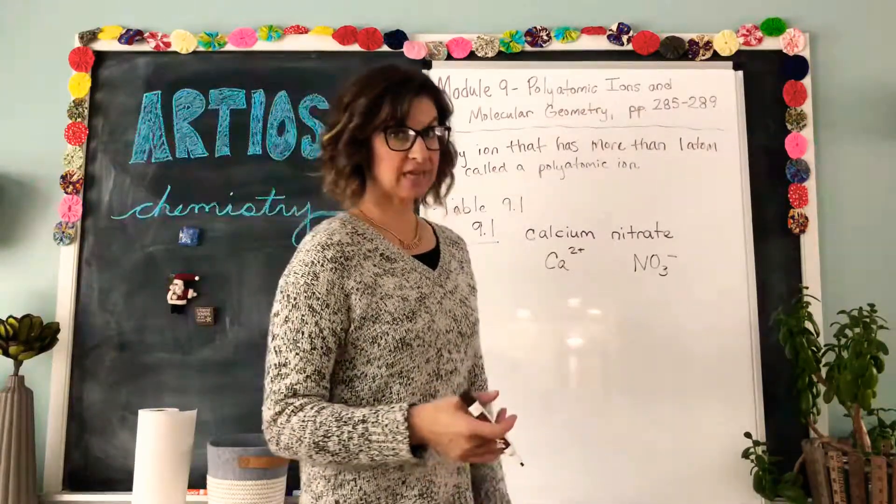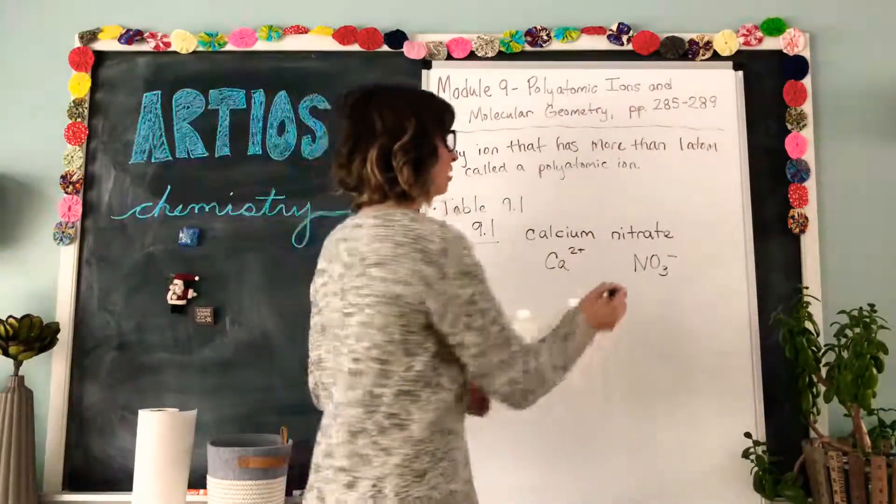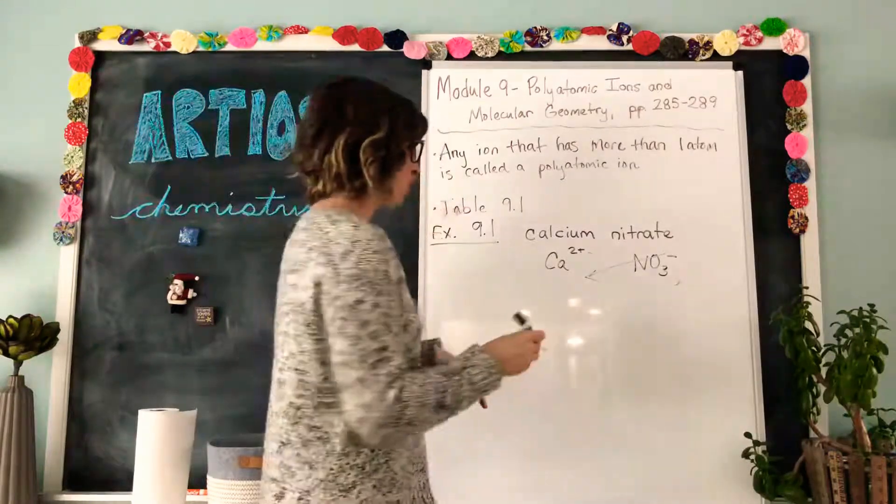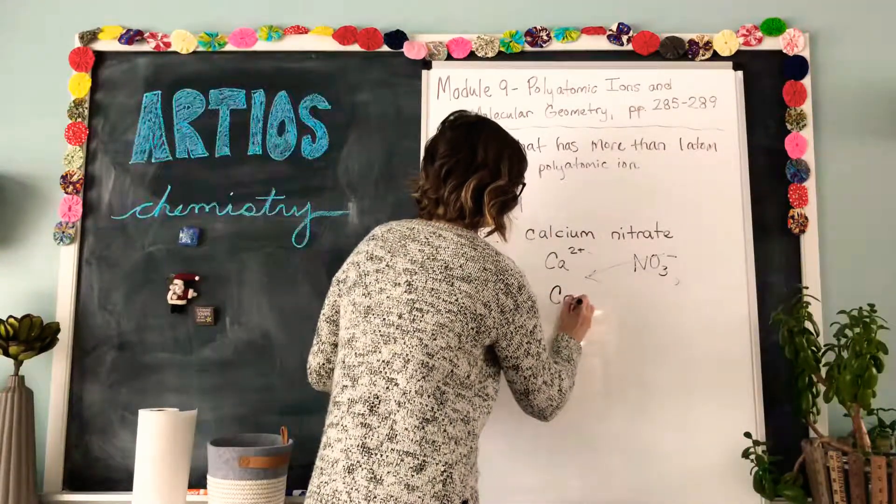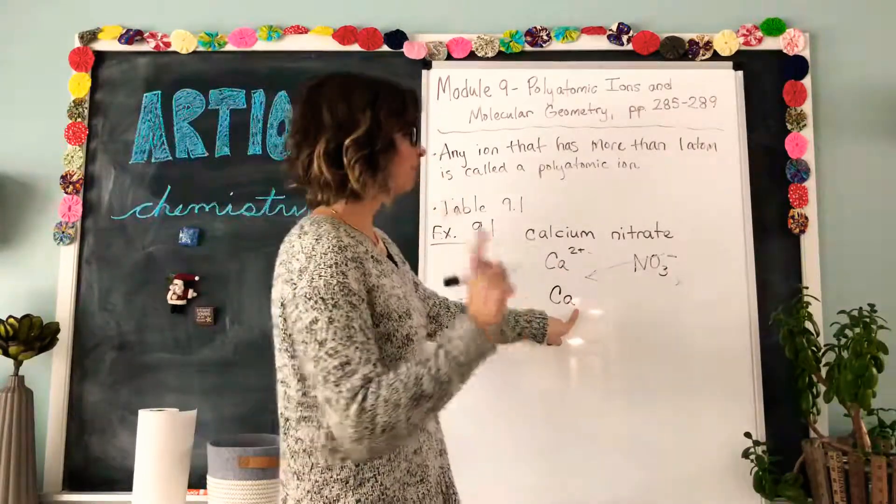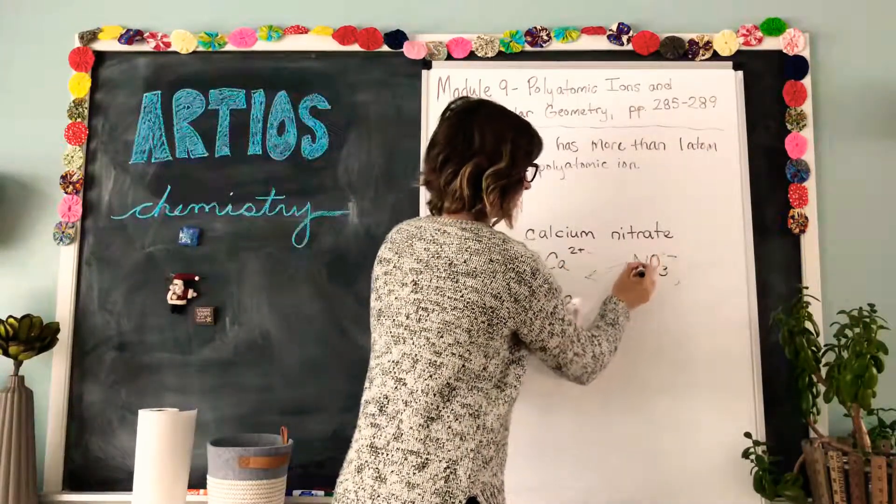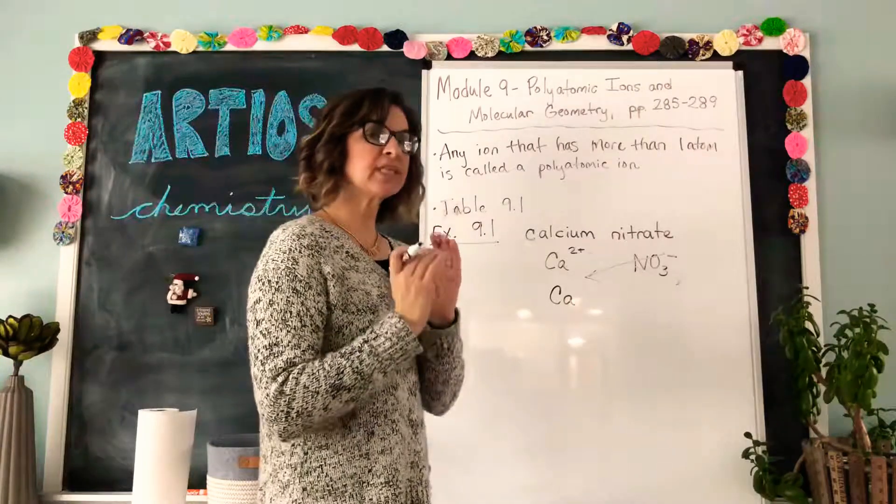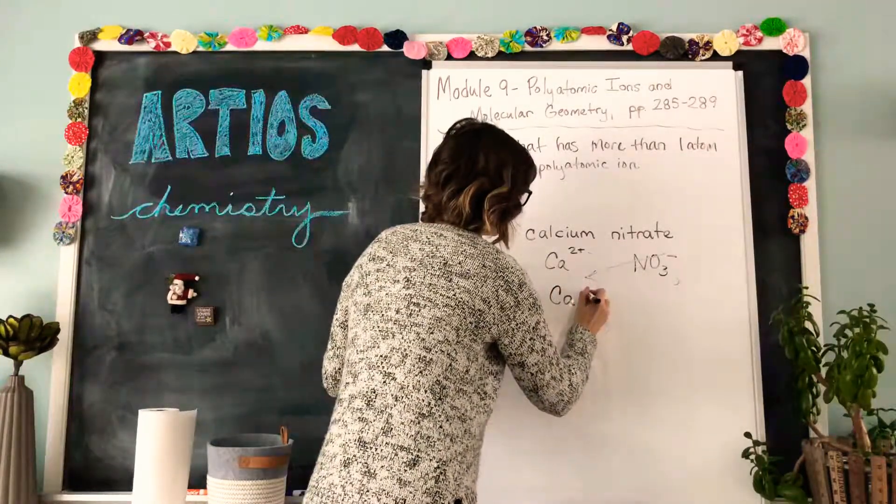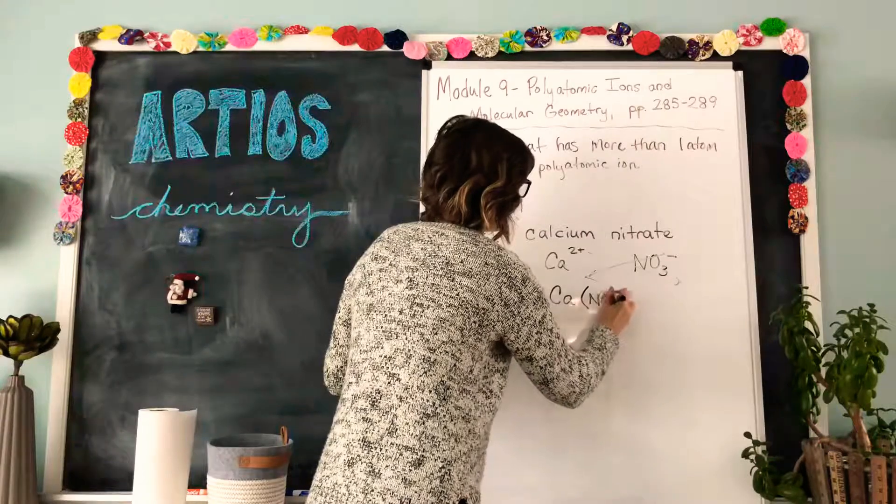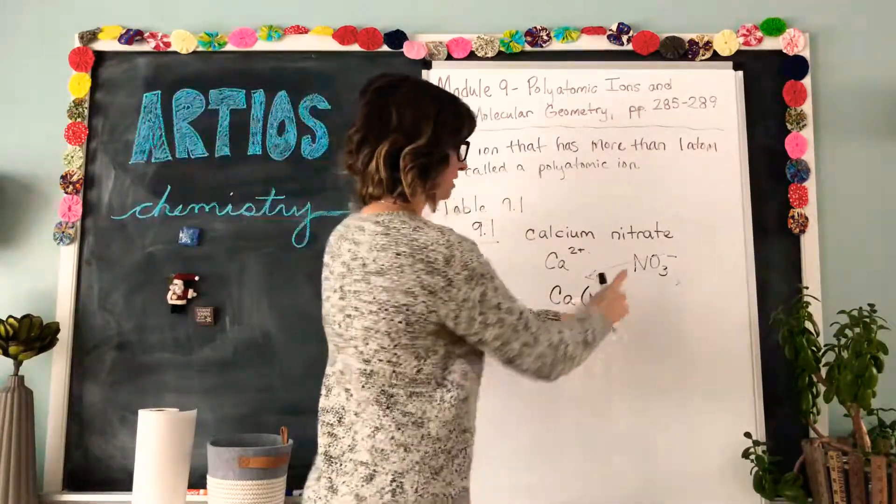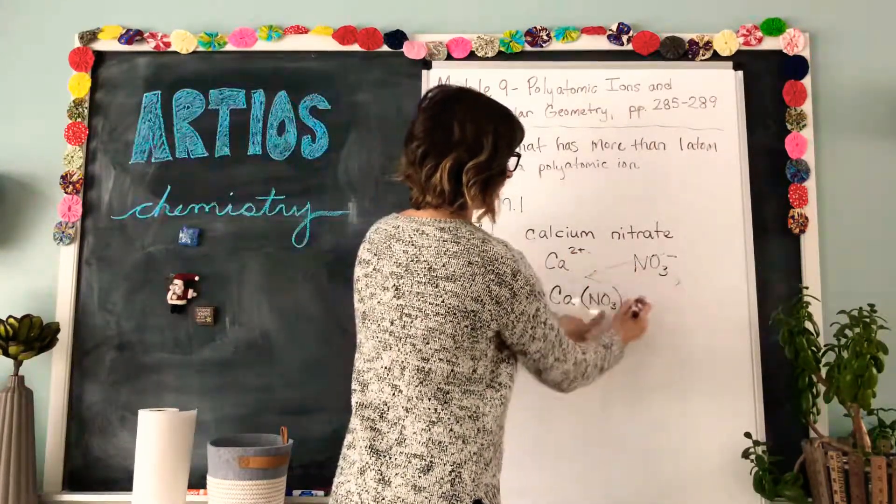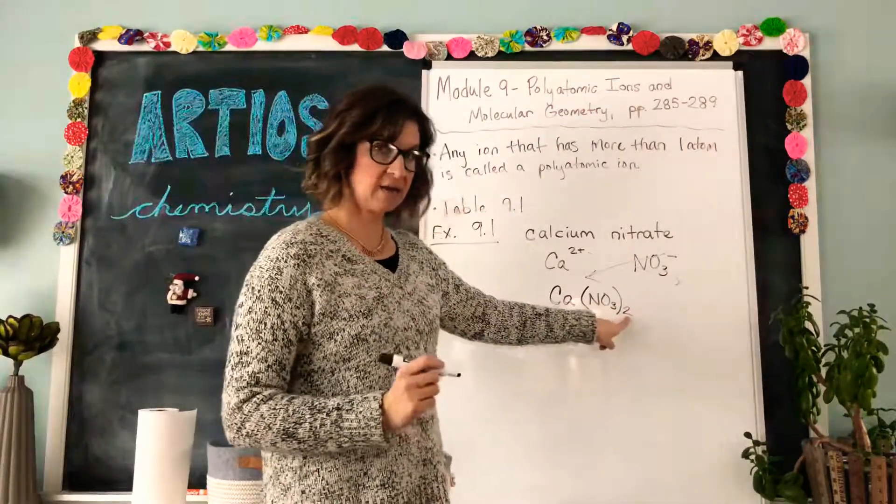Now in order to come up with the chemical formula for the whole molecule, we just do the trick that we learned last module by flip-flopping these two numbers and dropping the charges. So calcium would have an invisible one down there. Nitrate, you have to keep the atoms that are present in nitrate together, so we have to put them inside parentheses. So now we're going to write parentheses NO3, because that's what nitrate is, it's made of nitrogen and three oxygens. And then how many would we need? We'd need two of them. The two goes outside of the parentheses.